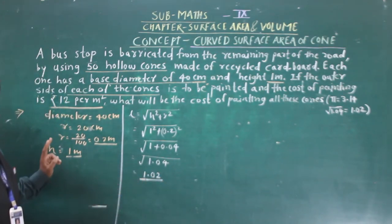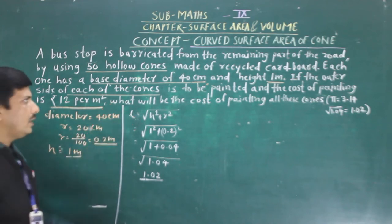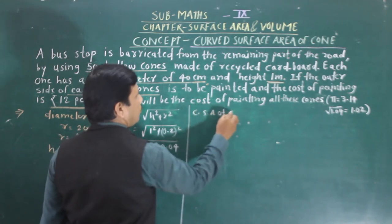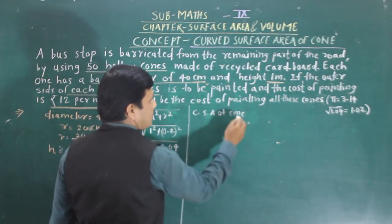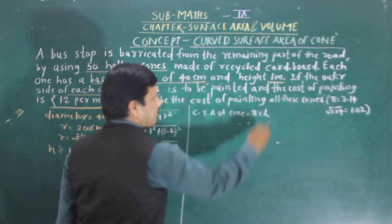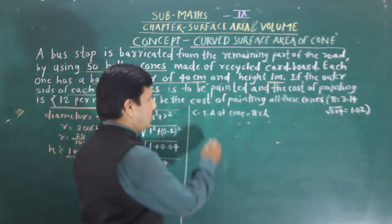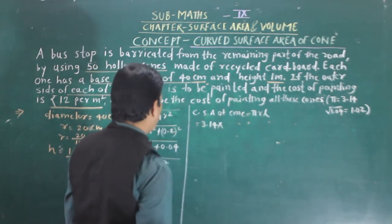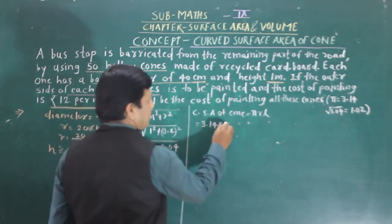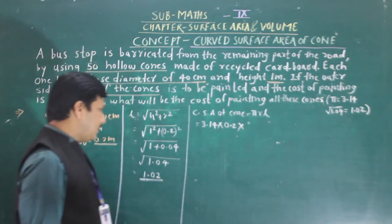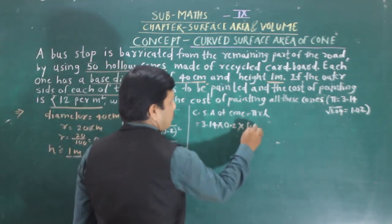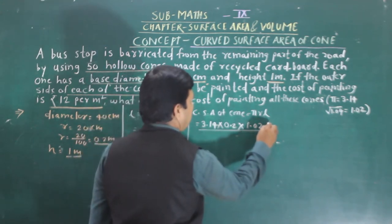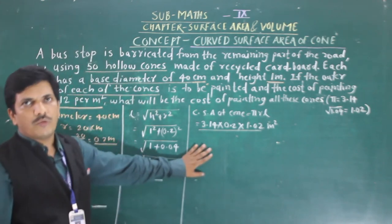Now we have the slant height. We have the radius. So we can find out the curved surface area of the cone. The curved surface area of a cone is equal to pi × r × l. Pi value is 3.14, radius is 0.2 meters, and slant height is 1.02 meters. So that gives us the curved surface area in meter square.